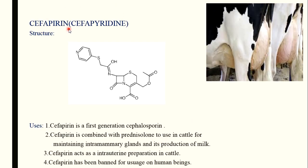The next structure is cephapyridine, also called cephapyridine — from the name itself we understand that a pyridine structure is present. At the third position of cephapyridine, a CH₂–O–CO–CH₃ acetyl side chain is present. At the fourth position there is a COOH group as usual. A CH₂–S group is also present, to which the pyridine ring is attached.